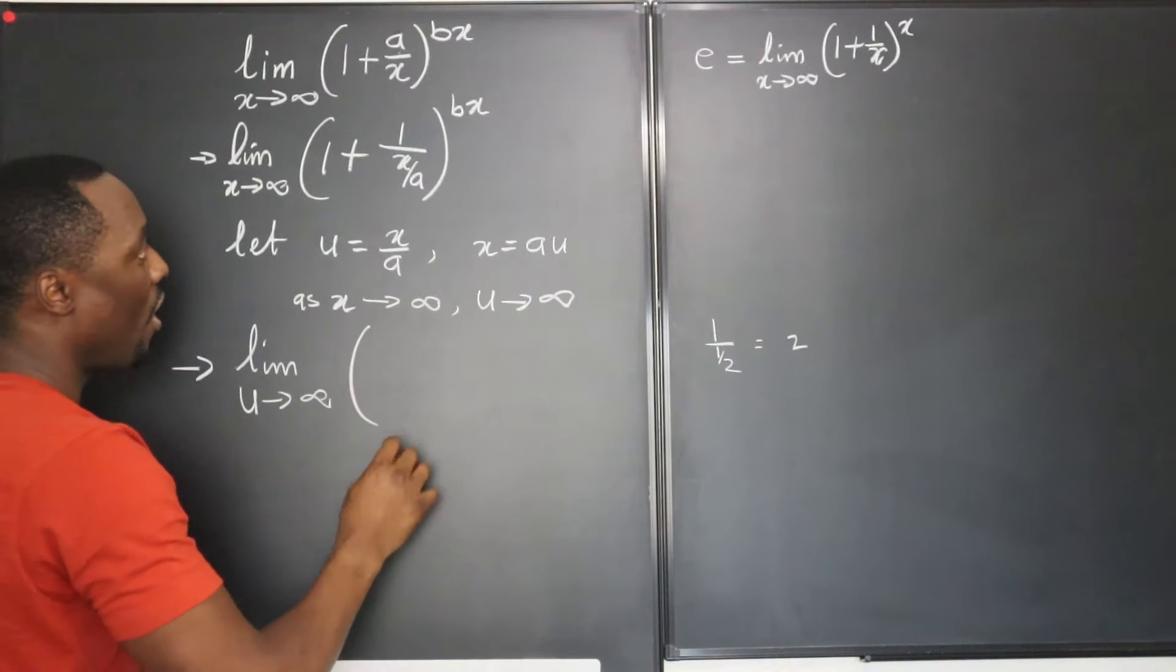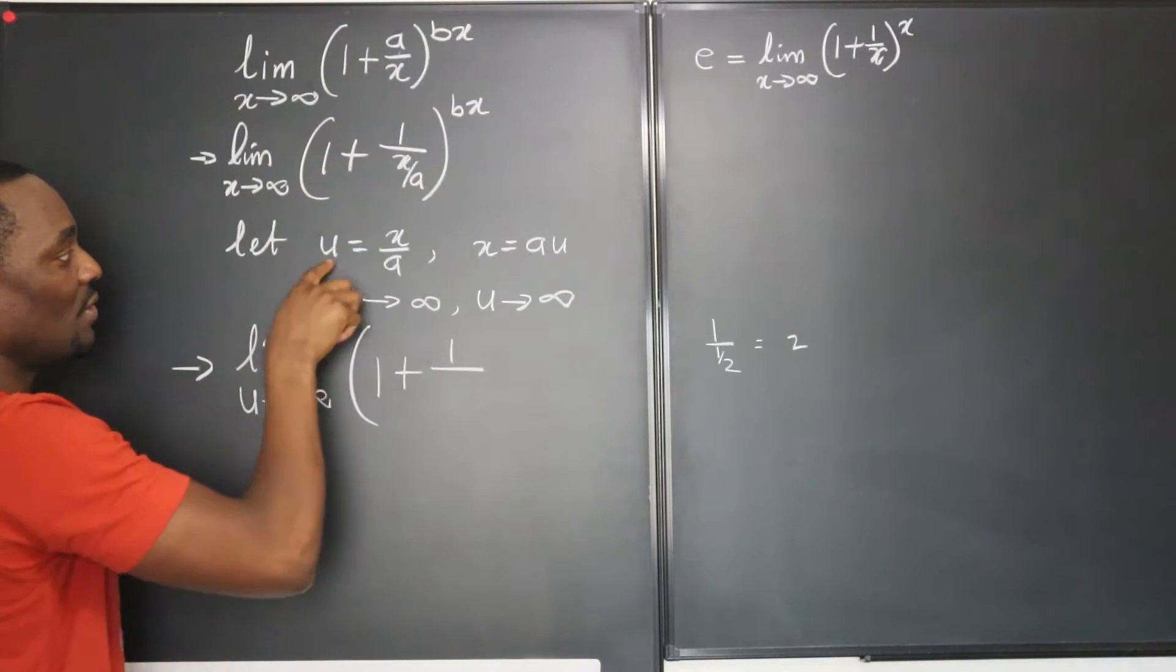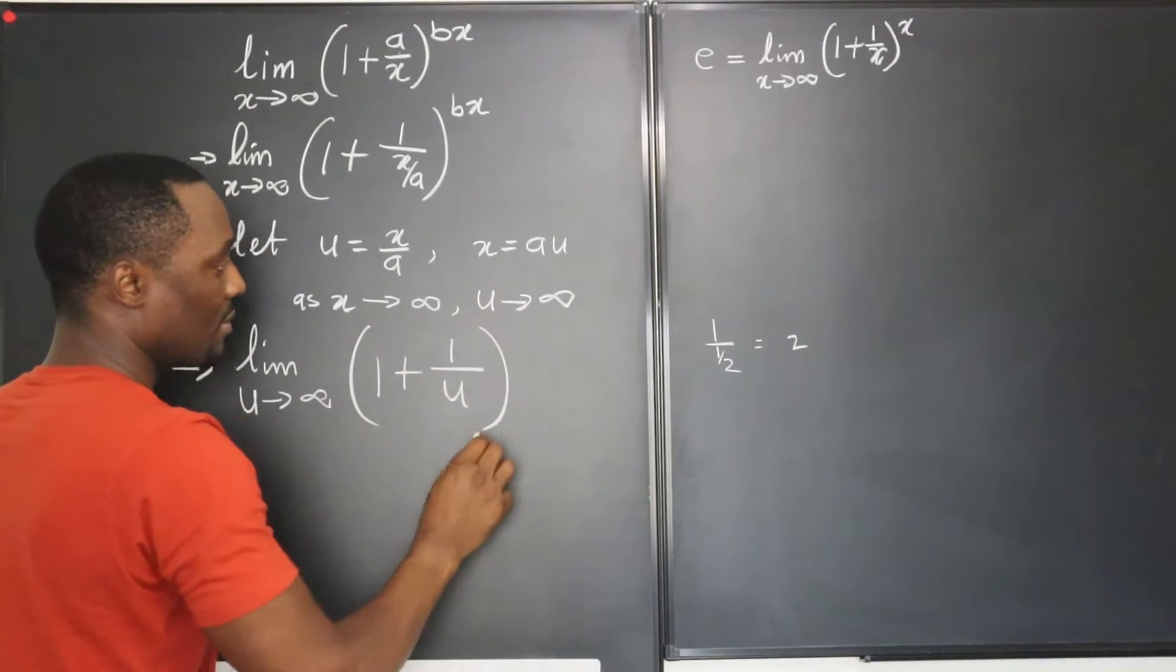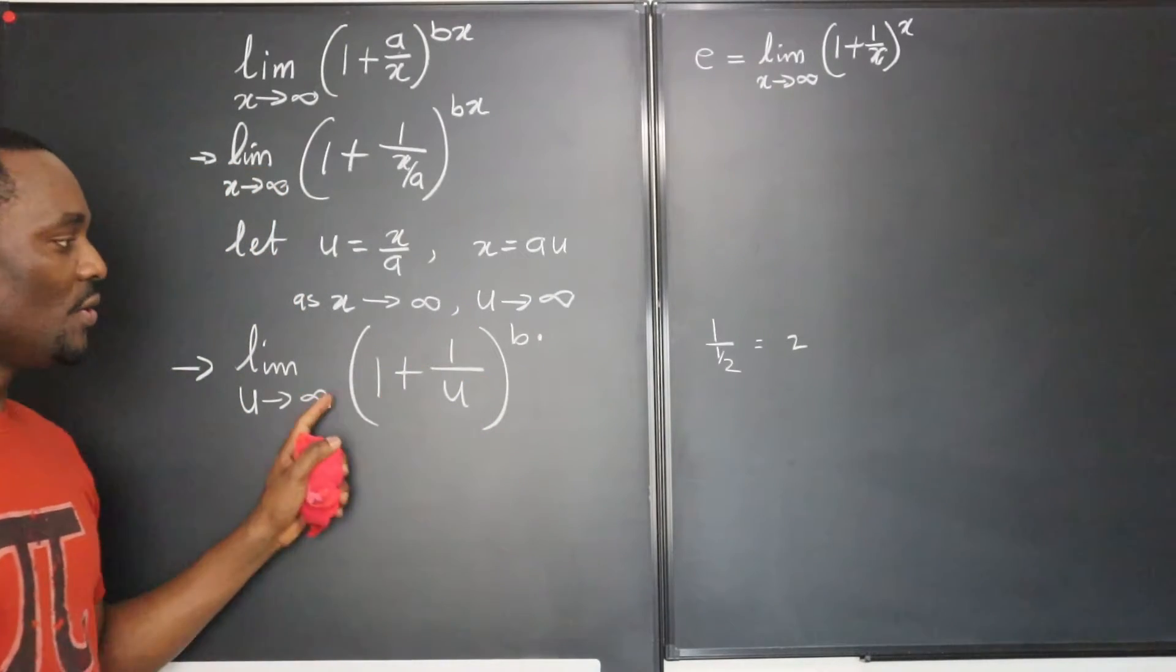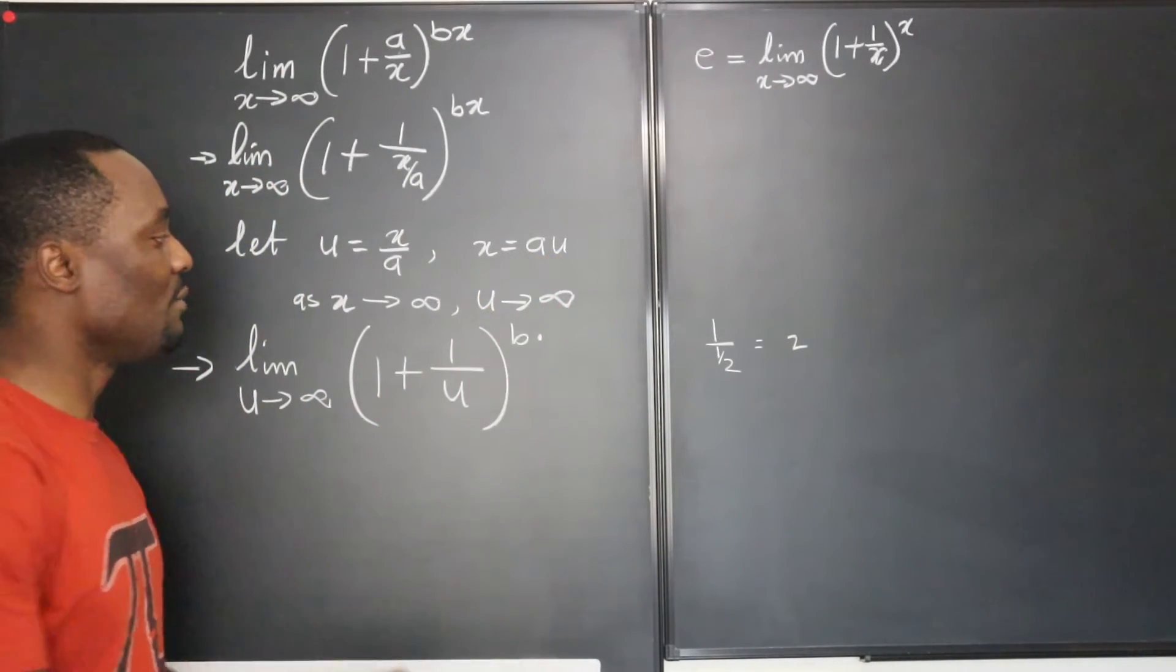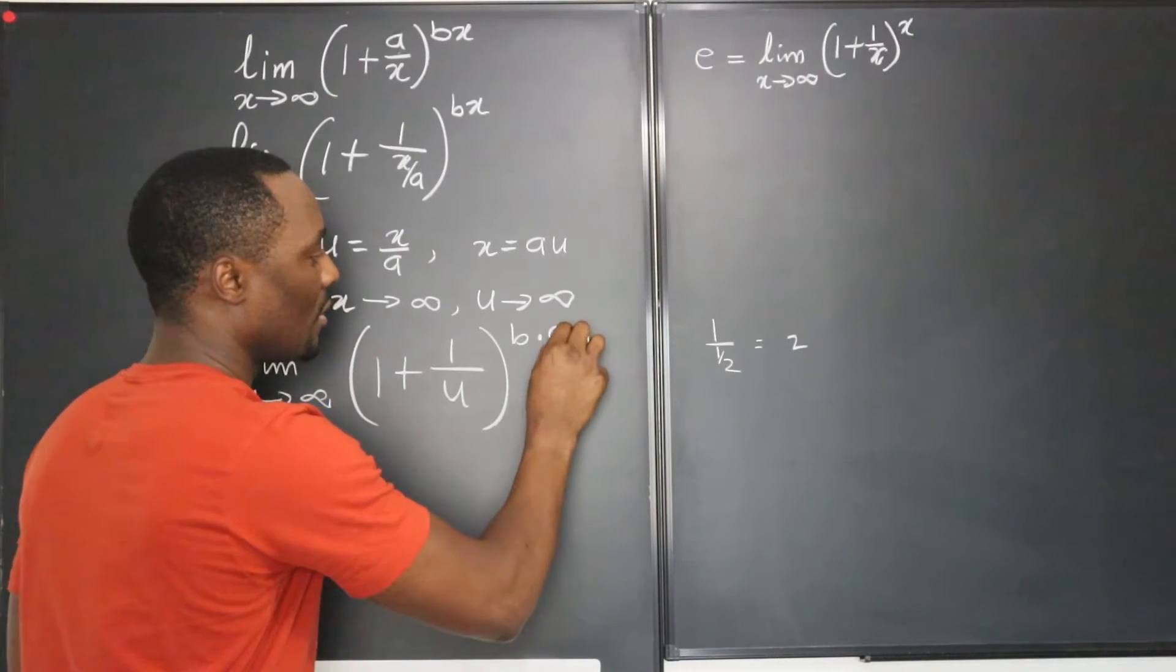Approaches infinity of this expression 1 plus 1 over, now this is u. So we have b multiplied by, now what is x? We're no longer using x. x is a times u. So that is a times u.